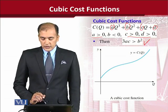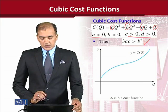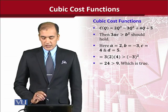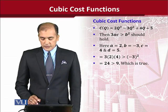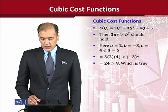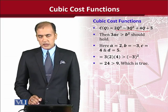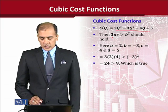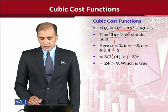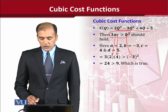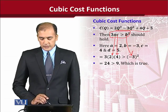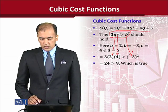Let us see how this condition can be verified. We use the same function where a was positive at 2, b is negative at 4, and c and d are both positive at 4 and 5. We should apply this condition by putting in the values: the value of a, the value of c, and we have replaced b with its value as well.